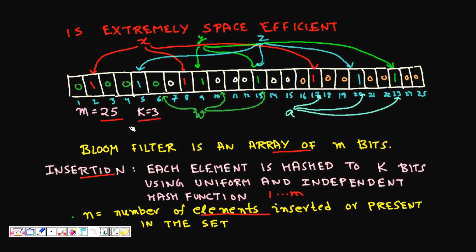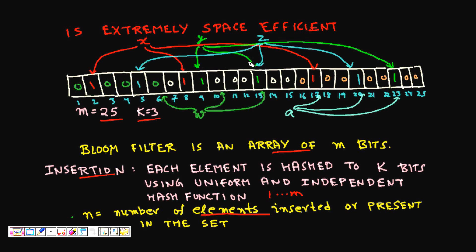Here we have m = 25 and k = 3. We have elements x, y, and z. Element x is hashed to bits 2, 8, and 17. Element y is hashed to bits 9, 13, and 23. Element z is mapped to bits 5, 13, and 20. Notably, z and y both map to bit 13 — this collision of cells can take place when you hash elements.